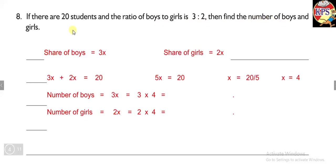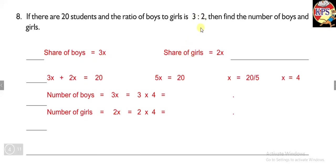Suppose there are 20 students in a class and the ratio of boys to girls is 3 ratio 2. This means the ratio of boys is 3 and the ratio of girls is 2. We have to find out the number of boys and number of girls separately. Because ratios are given, we can write the share of boys as 3x and the share of girls as 2x.